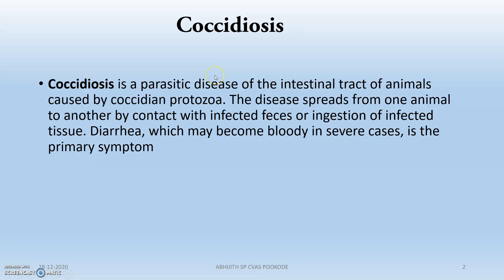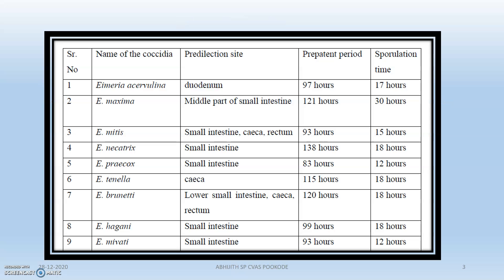So it is a parasitic disease which is causing damage to the intestinal tract of animals, producing diarrhea, bloody diarrhea, or severe congestion of the intestinal arteries and vessels.